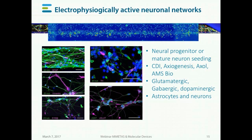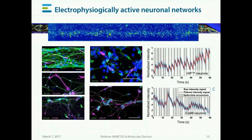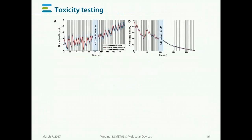The neuronal activity can be quantified inside these plates using pre-setup procedures to identify the firing cells. This allows us to modulate their activity — for example, if we have GABA-sensitive cells and we add GABA, we see that the spontaneous activity decreases, whereas when we add just medium, nothing changes.